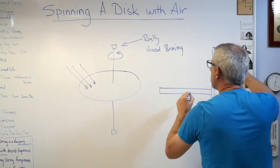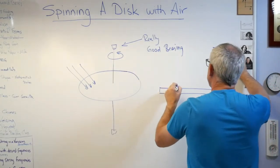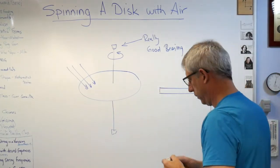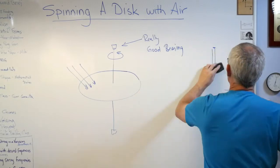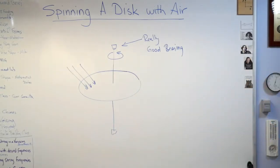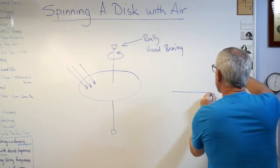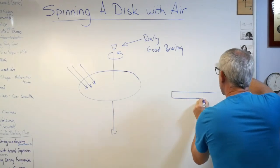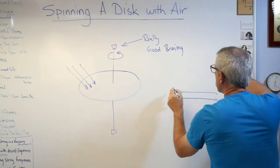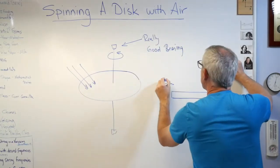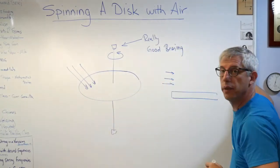That's the boundary layer. That's the change in velocity as you get close to a surface. There's going to be shear forces. Well if this really works then this thing ought to start spinning, right?